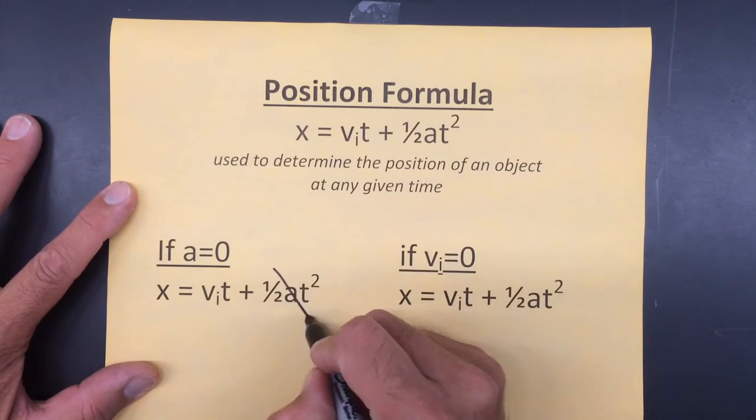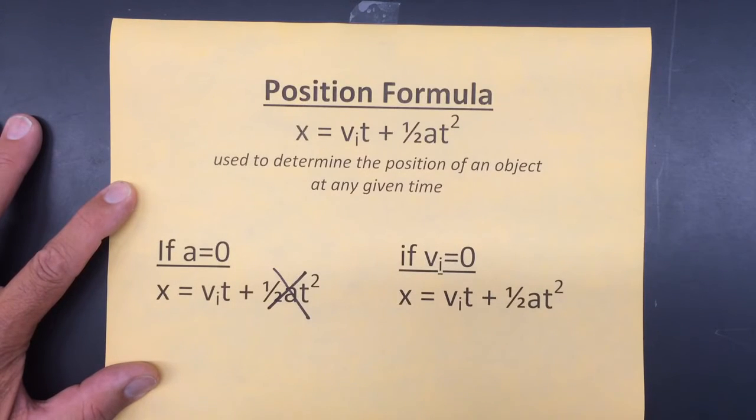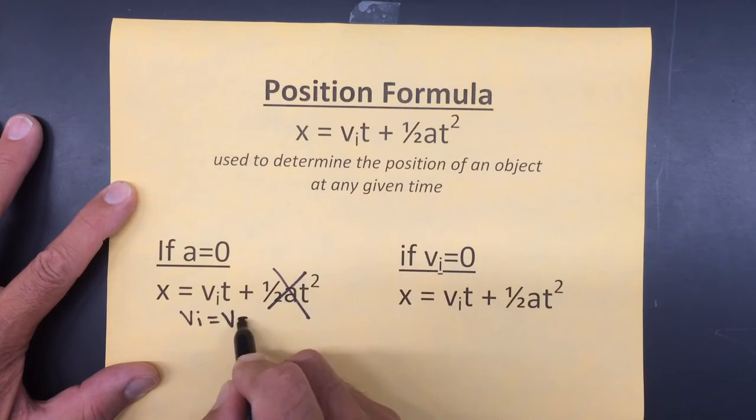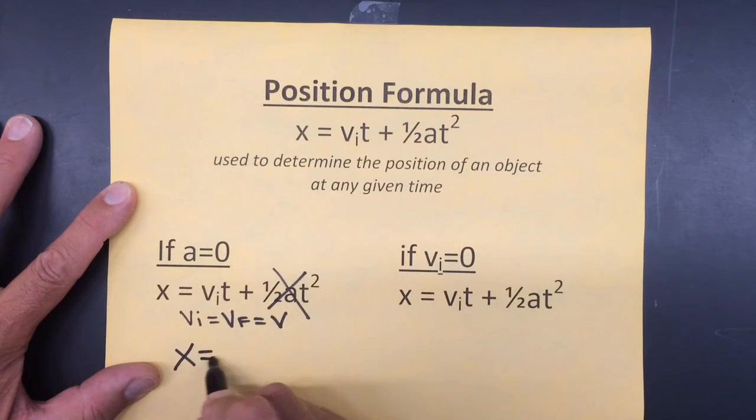Now, if a equals zero, it drops out of the equation. If a equals zero, we know that the initial velocity equals the final velocity, so we can just call that v. The equation is reduced to: the position depends on the speed of the object times the time of travel.